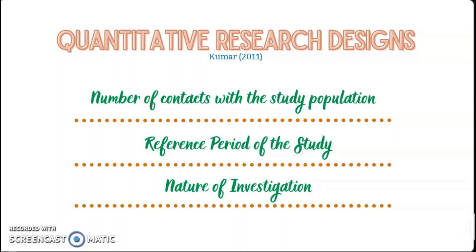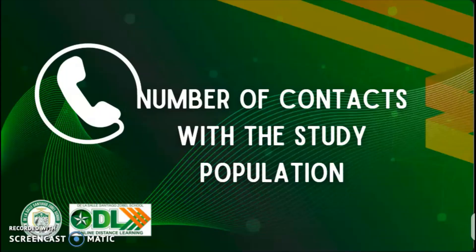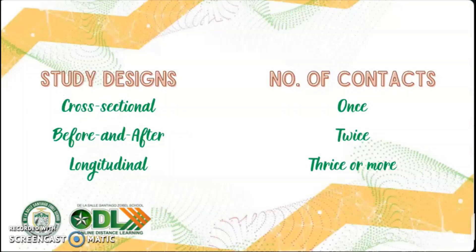Here we go with the first category: number of contacts with the study population. The study designs under this category are cross-sectional, before and after, and longitudinal. For cross-sectional studies, you only contact your respondents once. For before and after, you contact your respondents twice. And for longitudinal, you contact them thrice or more.